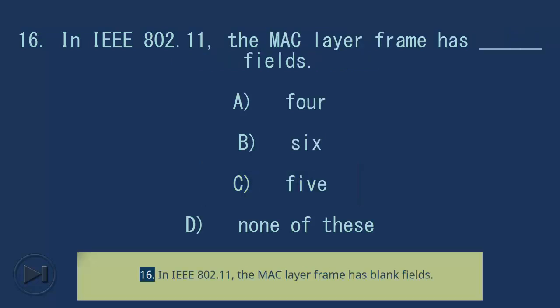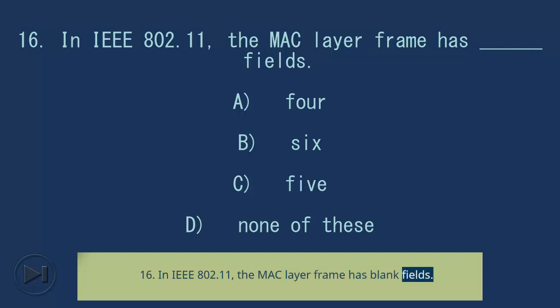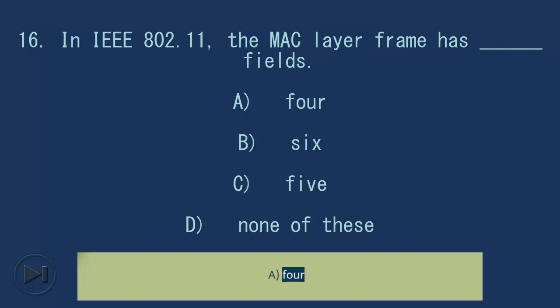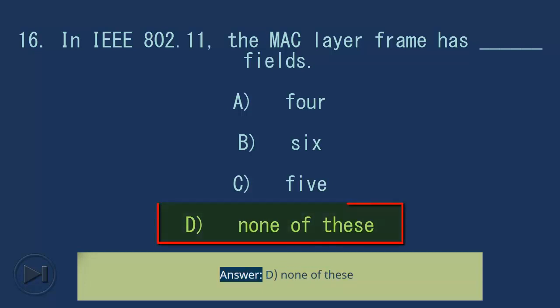Question 16: In IEEE 802.11, the MAC layer frame has blank fields — 12. A. 4, B. 6, C. 5, D. None of these. Answer: D. None of these.